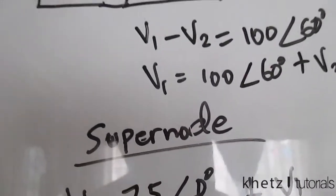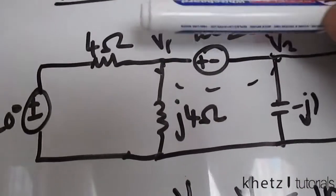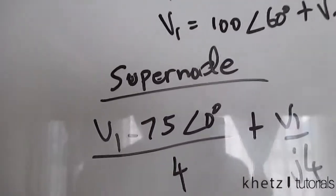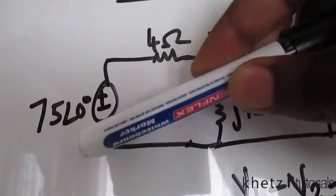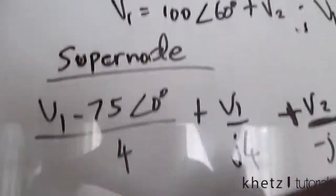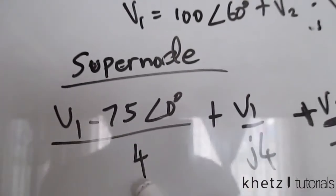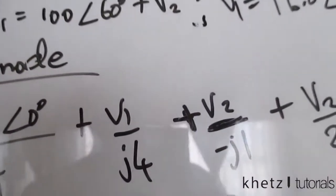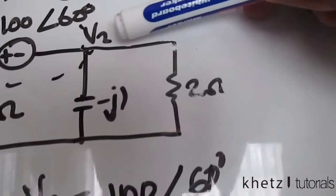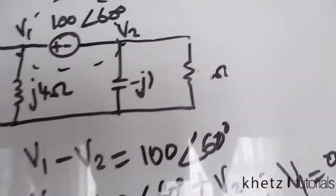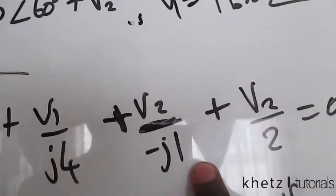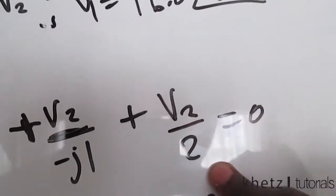The equation of the super node is formed by adding the equations on both sides. Using nodal analysis we have: (V1 subtract 75) divided by 4, plus V1 divided by J4 on the left side, and V2 divided by J1 plus V2 divided by 2 on the right side, all equal to zero.